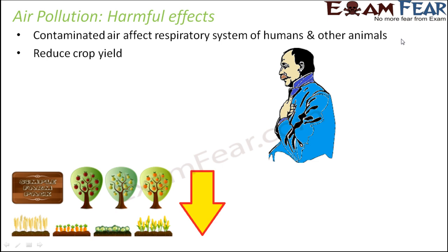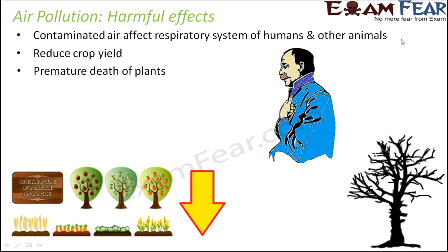This contaminated air can also reduce crop yield. If the air is polluted, plants are affected too, since they also need air. The carbon dioxide or nitrogen that enters inside the plant is no longer pure — along with it, some harmful chemicals are also entering inside the plant. As a result, the crop yield might reduce, and this can even lead to premature death of a large number of plants.